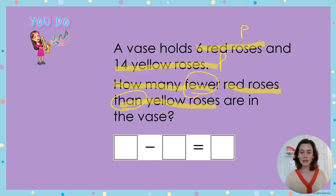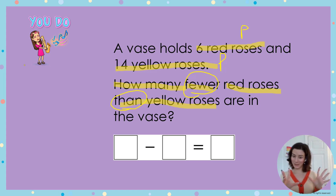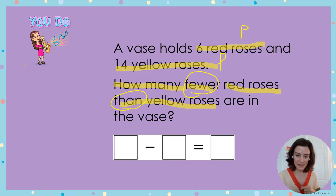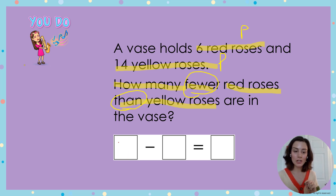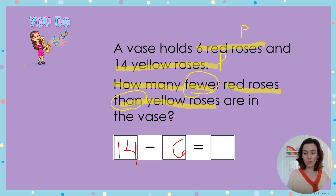I have a vase that holds 6 red roses and a vase that holds 14 yellow roses. My question is: how many fewer red roses than yellow roses are in the vase? I have to subtract to find the difference between the two. I want you to write the number sentence strategy on your board. I know I have 6 red roses and 14 yellow roses, but I need to remember to write my larger amount first because I can take 6 from 14 but I cannot take 14 from 6. So I have 14 minus 6 equals...